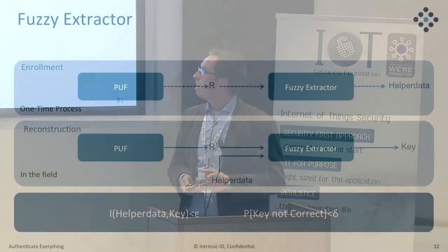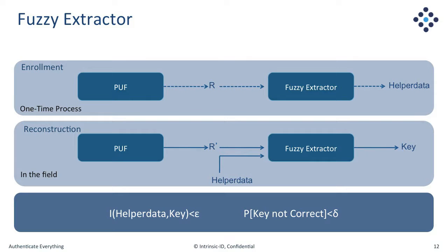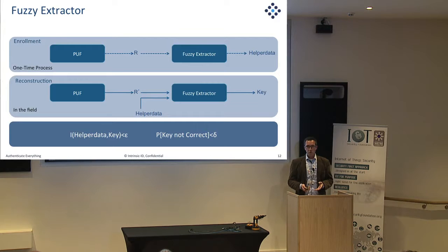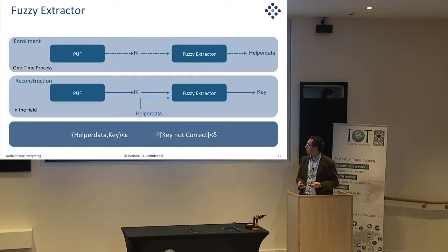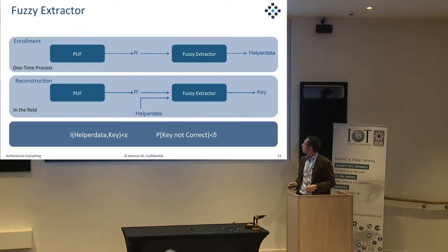The Fuzzy Extractor is an algorithm that reads out a PUF response — the startup pattern of the SRAM, for example. In an enrollment phase, you first create helper data. This helper data is non-sensitive information that can be stored in any memory, because looking at the helper data reveals nothing about the key. It only needs to be generated once. Whenever you need the key, you use this helper data on a new PUF readout, feed it into the Fuzzy Extractor, and the key comes out — the same key every time, despite the slight noise in the PUF response.